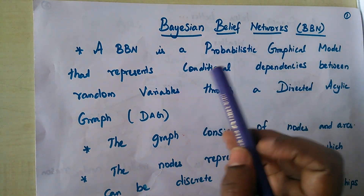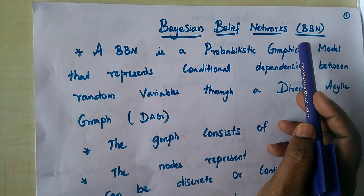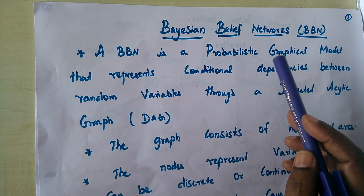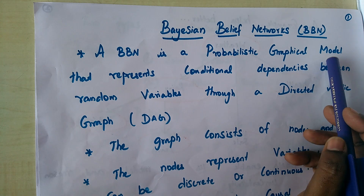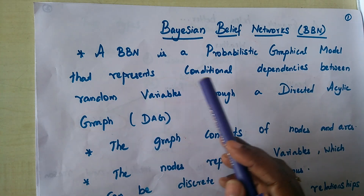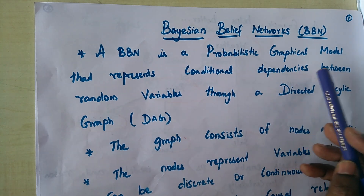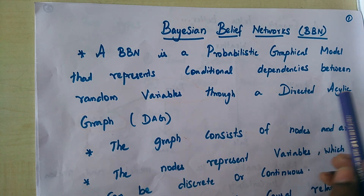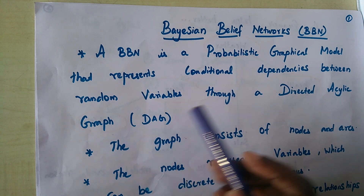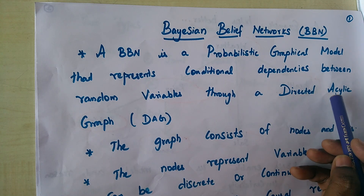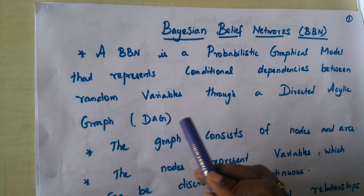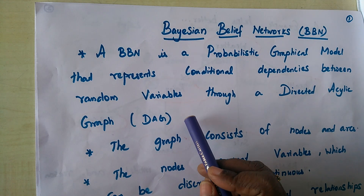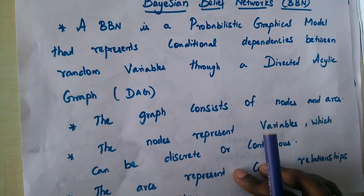Today we are going to see about Bayesian belief network, that is BBN. A BBN is a probabilistic graphical model that represents conditional dependencies between random variables through a directed acyclic graph. The directed acyclic graph will have directions between the random variables but will not have a cycle.